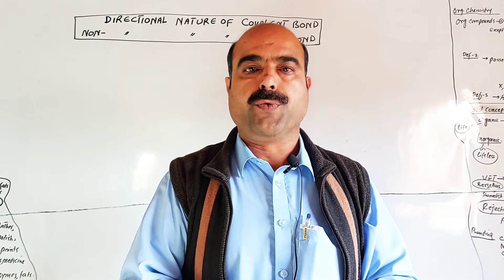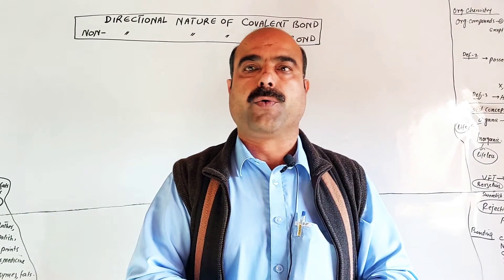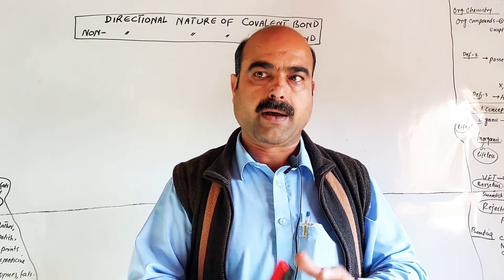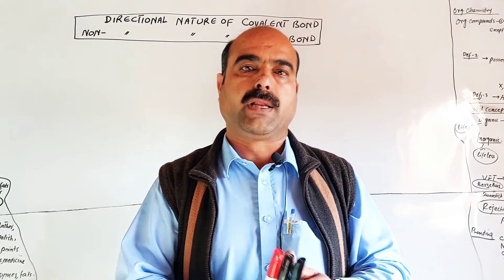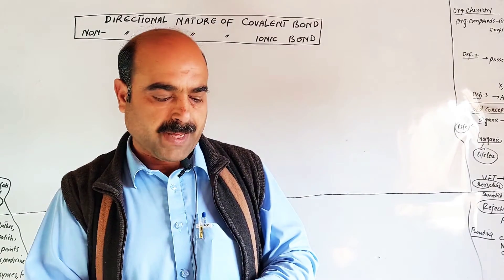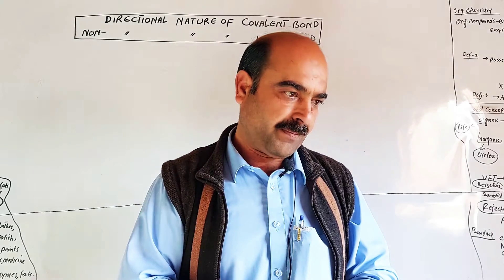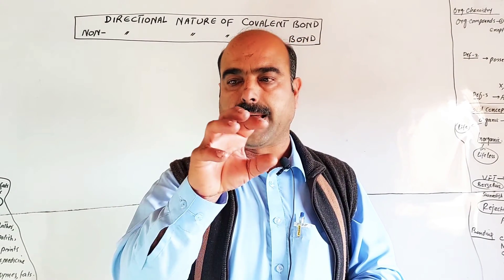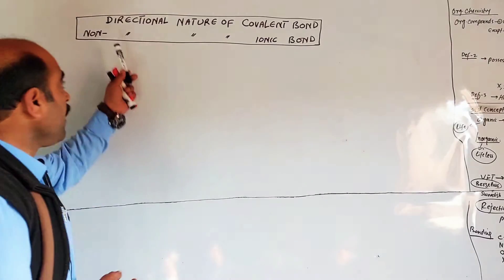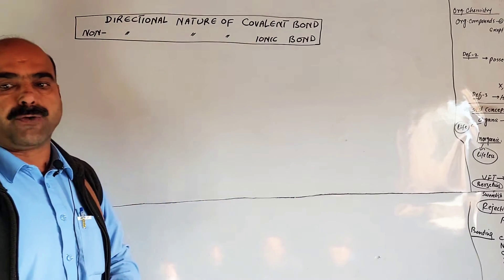Today we have a new topic: the directional nature of covalent bond and non-directional nature of ionic bond. The topic is simple — ionic bond is non-directional, and covalent bond is directional. We will explain these properly.